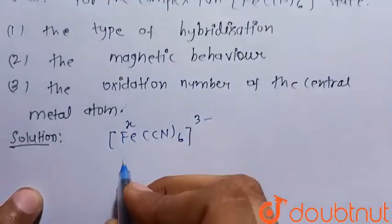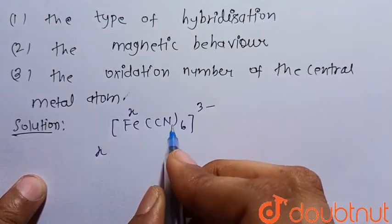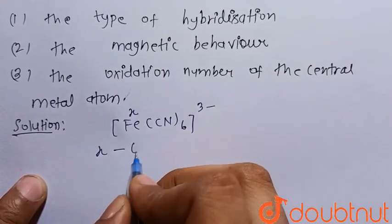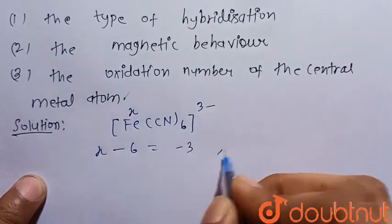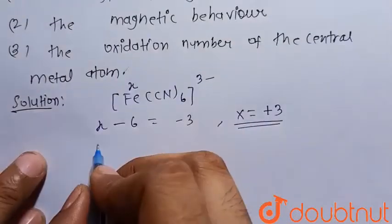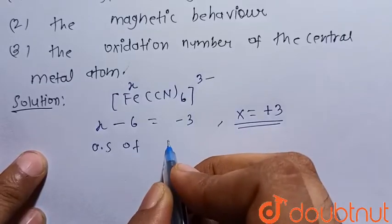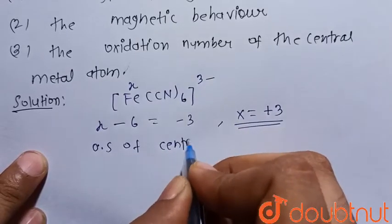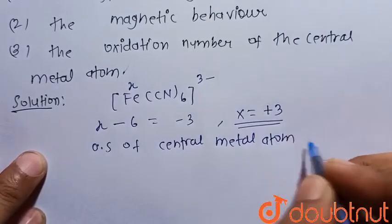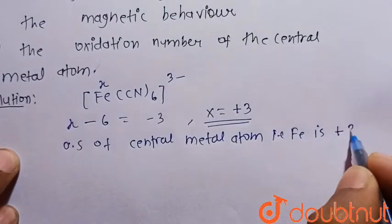Let x be the oxidation state of iron. We know that CN has a minus 1 charge. So x + 6(−1) = −3, which gives x = +3. So the oxidation state of the central metal atom, which is iron, is +3.